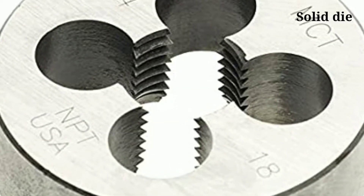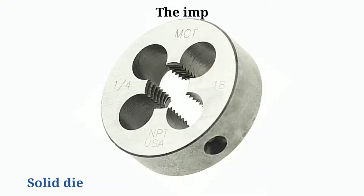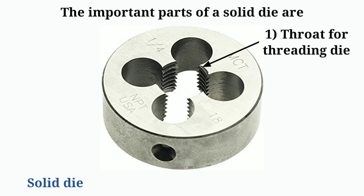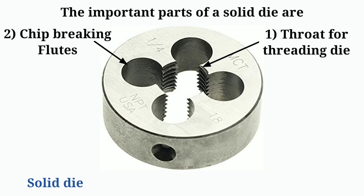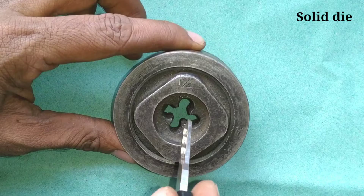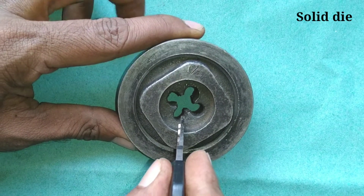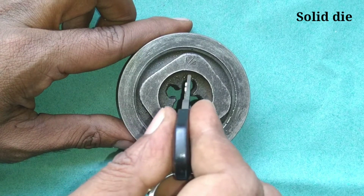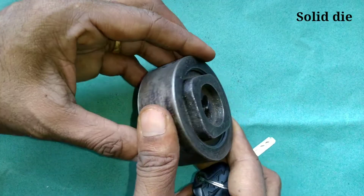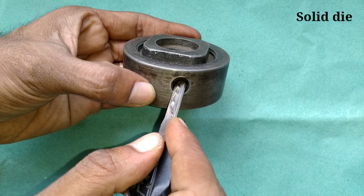Solid dies usually have 5 or more cutting edges. The important parts of a solid die are: the throat for threading, chip breaking flutes, thread profile, and drill holes for the stock. The throat guides the die onto the thread, the chip breaking flutes clear material, the thread profile forms the thread, and the drill holes allow the die stock to hold the die.